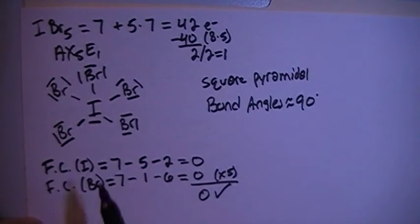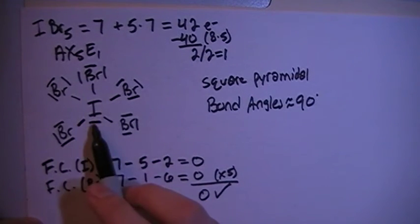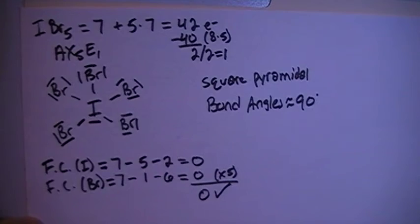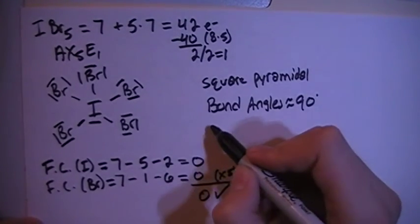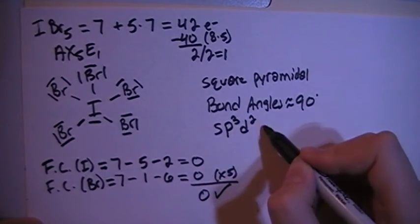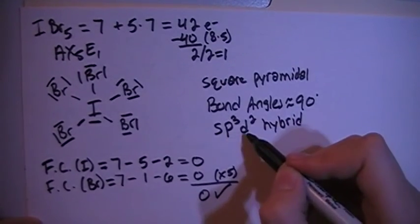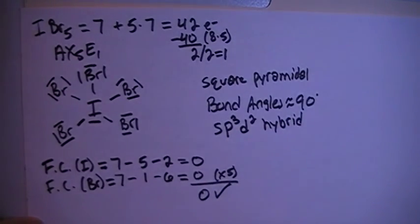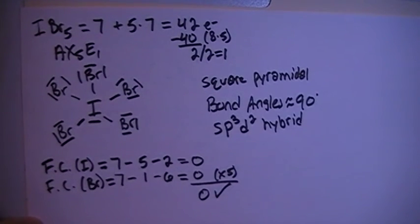In terms of hybridization, looking at the central iodine here, you have 1, 2, 3, 4, 5, and 6 electron groups or possible bonding sites. So that means we need 6 hybrid orbitals. So we're going to go with SP3D2 hybrid. So you have 1S, 3Ps, and 2Ds for a total of 6 hybrid orbitals to match up with the 6 electron groups.